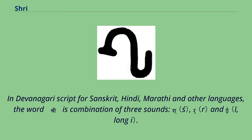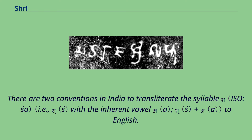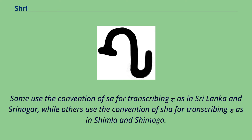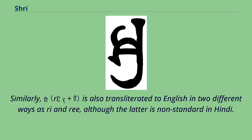In Devanagari script for Sanskrit, Hindi, Marathi and other languages, the word is a combination of three sounds. There are two conventions in India to transliterate the syllable to English: some use the convention of Sa as in Sri Lanka and Srinagar, while others use Shah as in Shimla and Shimoga. Similarly, the vowel is also transliterated in two different ways as Ri and Ri, although the latter is non-standard in Hindi.